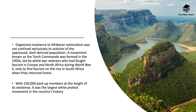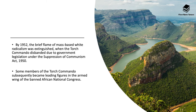Organised resistance to Afrikaner nationalism was not confined exclusively to activists of the oppressed dark-skinned population. A movement known as the Torch Commando was formed in the 1950s, led by white war veterans who had fought fascism in Europe and North Africa during World War II, only to find fascism on the rise in South Africa when they returned home. With 250,000 paid-up members at the height of its existence, it was the largest white protest movement in the country's history. By 1952, however, the brief flame of mass-based white radicalism was extinguished when the Torch Commando disbanded due to government legislation under the Suppression of Communism Act of 1950. Some members subsequently became leading figures in the armed wing of the banned African National Congress, known as the ANC.